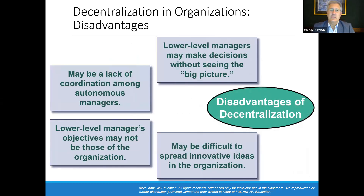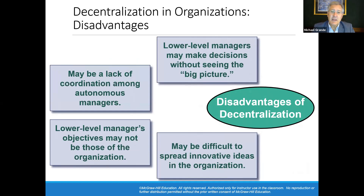But there are also disadvantages. There may be a lack of coordination among autonomous managers. Lower level managers' objectives may be different from those of the organization, and lower level managers may make decisions without seeing the big picture of the overall organization.